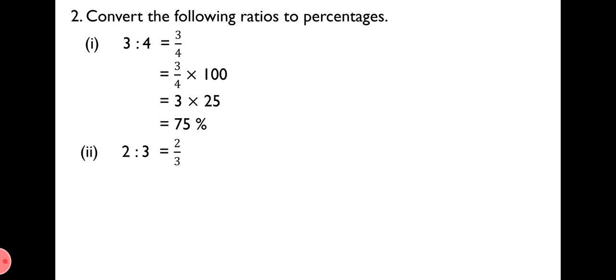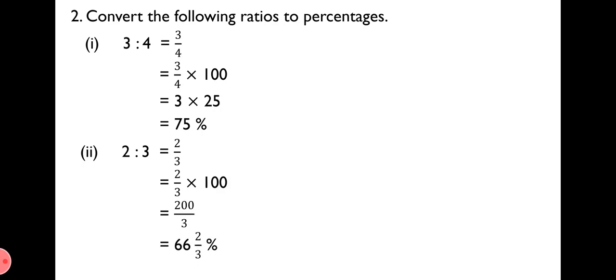Number 2: 2:3, written as 2/3. Multiply by 100: 2/3 × 100 = 200/3. Since this is an improper fraction, we convert to a mixed number: 200 ÷ 3 = 66 and 2/3. So the answer is 66⅔%. Whenever you get an improper fraction — where the numerator is bigger than the denominator — convert it to a mixed number.